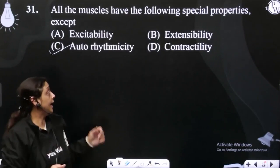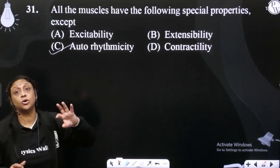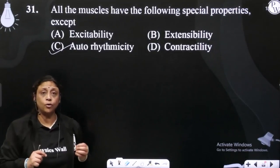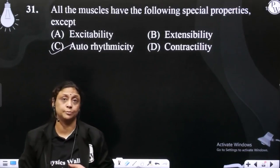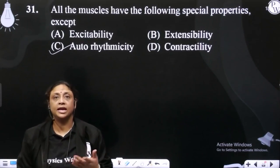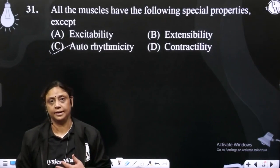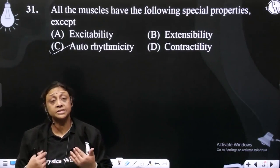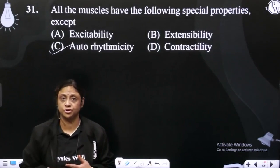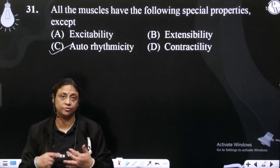And autorhythmicity. Autorhythmicity is what happens in cardiac muscles. Cardiac muscles have SA node, AV node. They are auto excitable. Self depolarization generates. Self impulse generates.